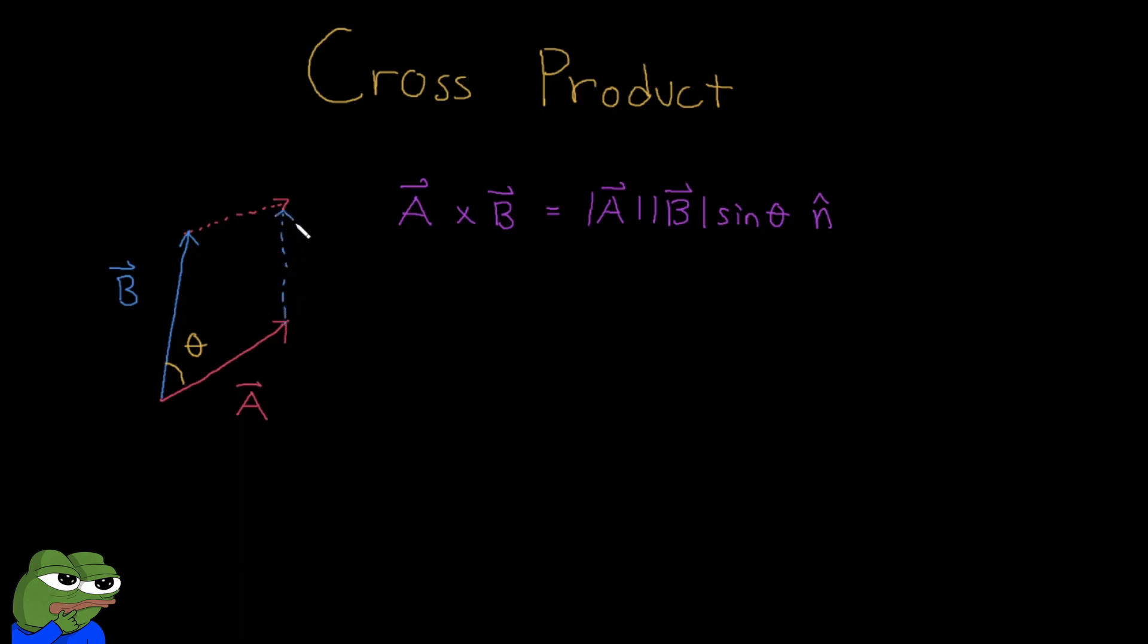we can see that we can find the area of this parallelogram by multiplying this line, which is the magnitude of our vector A. We multiply that by this segment over here. Now if you notice, I just made a right triangle where the right angle is here. And so if we do our sine theta is equal to the opposite side over hypotenuse, we see that our hypotenuse is actually the magnitude of vector B over here. And so we can transpose that and take that B sine theta is equal to this opposite side that we're interested in.